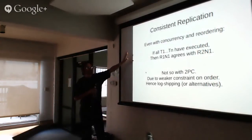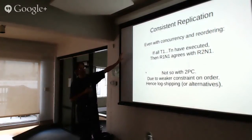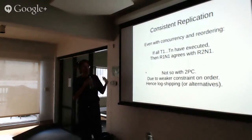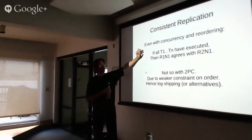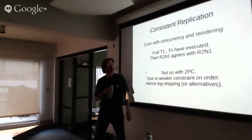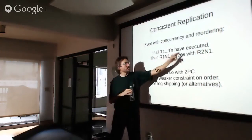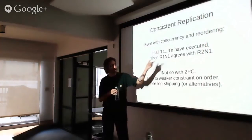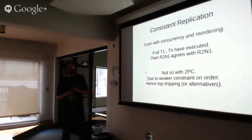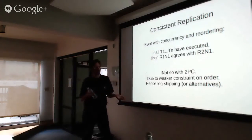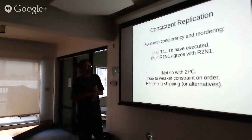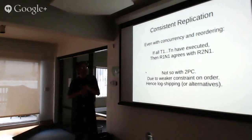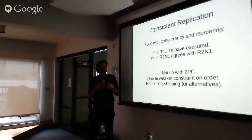This is one of the cool things about Calvin. Even with all the concurrency reordering we're doing, because we have the invariant on the lock manager, we get this property: if all transactions up to the Nth have executed in R1N1, and all transactions up to N have executed in R2N1, then the state of those two nodes will actually be the same. At any particular point in clock time they may not have executed the same transactions, but eventually they will, and they always stay close to being synchronized — they always come back to the same state.